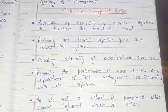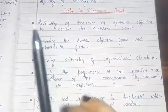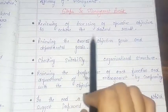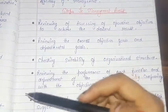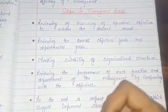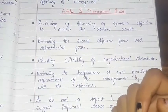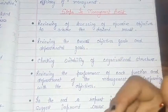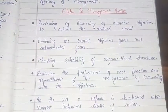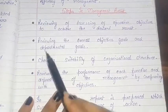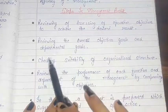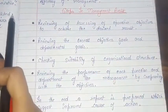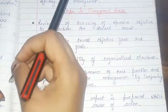What are the steps required for management audit? The first step is reviewing of operative objectives to achieve the desired result. We need to review our objectives so that we can compare them with the actual result. This includes reviewing the overall objectives, goals, and departmental goals, which shows the whole business and each particular department's objective and goal.